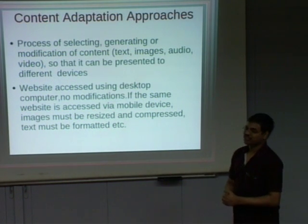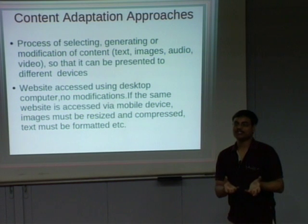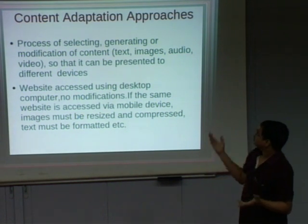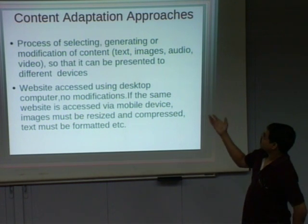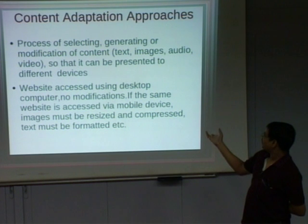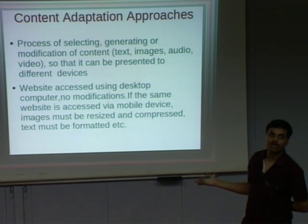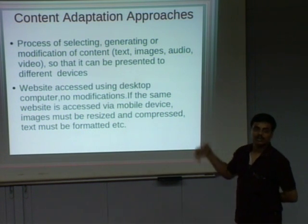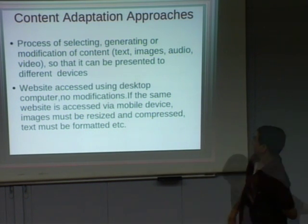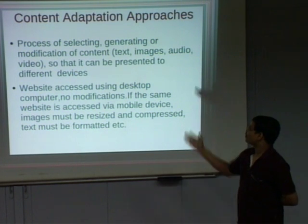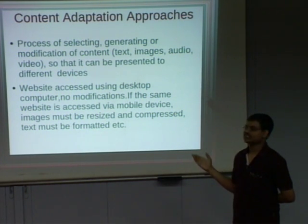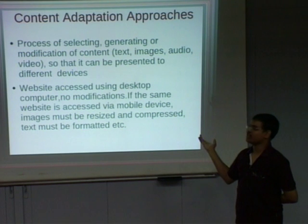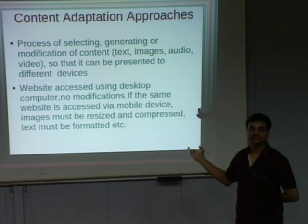What is the content adaptation approach? When we have developed some content, it should be adapted to every tablet or every PC. It has to modify the content — compress the text, compress the images, resize images, and format text according to the device. Content adaptation will be adapted according to the device type. If the website is accessed on a normal desktop computer, no modification is required. If the same website is accessed via a mobile device, then all these adaptations will happen.